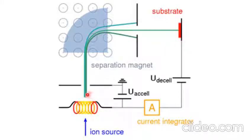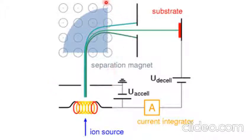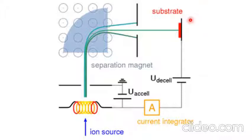Typically, the ion implantation system consists of the ion creation source, the accelerator, the magnetic separator, the magnetic ion blocker, and the substrate in which we want to do the implantation.